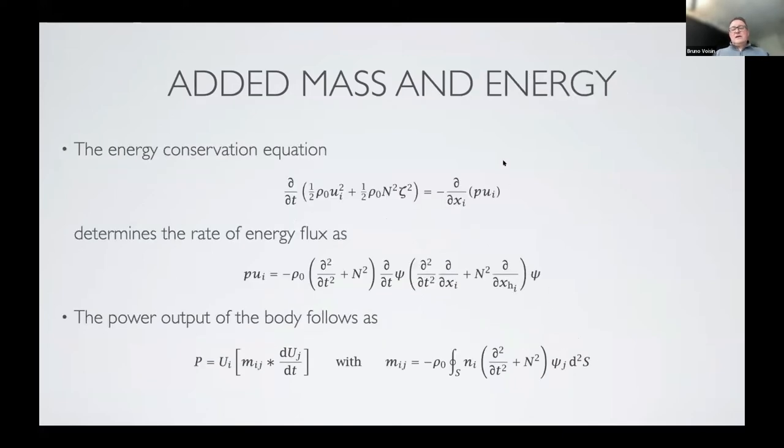From the equations of motion, we deduce an energy conservation equation which identifies an energy flux vector. By integrating this energy flux over the surface of the body, we get the power output of the body, which again can be expressed in terms of added mass coefficients and velocity and acceleration of the body.